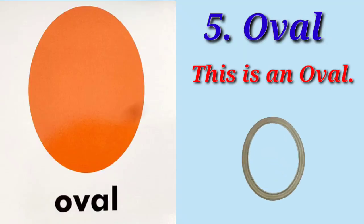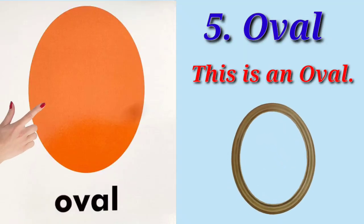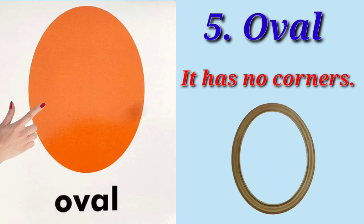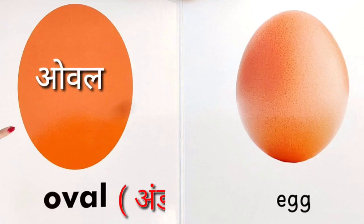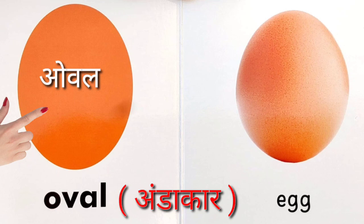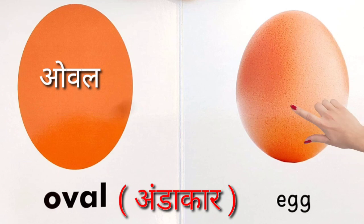Oval. This is an oval. It has no corners. Oval means undercard. The shape of the egg is like an oval.